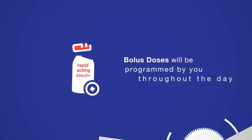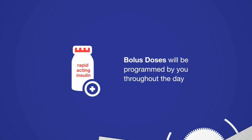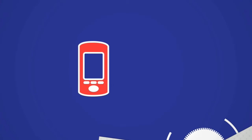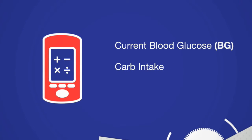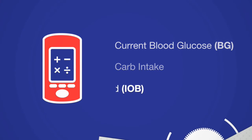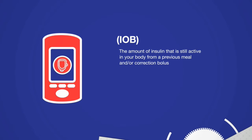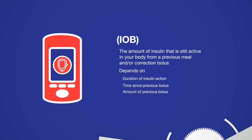Unlike basal rates, bolus doses will be programmed by you throughout the day. Once you have planned your meals and counted carbs, the Omnipod insulin management system will help you calculate a bolus dose for meals and correction boluses with the suggested bolus calculator. This calculator considers your current blood glucose level, the number of grams of carbs you are about to eat, and your insulin on board, or IOB. IOB is the amount of insulin that is still active in your body from a previous meal and/or correction bolus, and it depends on the duration of insulin action, time since the previous bolus, and the amount of the previous bolus. IOB helps prevent the stacking of insulin when bolusing.